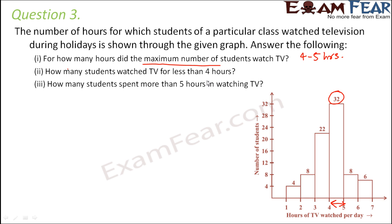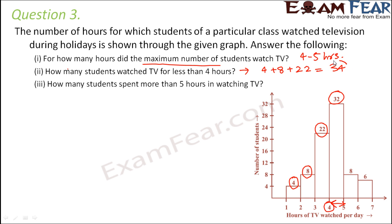How many students watched TV for less than four hours? Four hours is the boundary, so we count all students who lie below it: four students watched one to two hours, eight students watched two to three hours, and 22 students watched three to four hours. That gives 4 plus 8 plus 22, which equals 34 students.